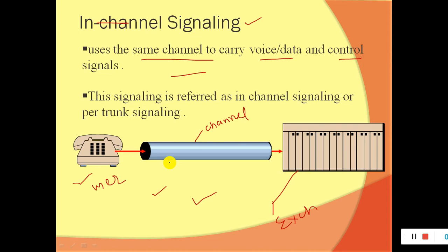Control signals are those signals which help to establish, maintain, and register a call. These are very important — I would say they are as important as your voice and data and cannot be ignored. Signaling refers to these control signals. Here we are trying to understand how many types of signaling we have. First is in-channel signaling, in which data and control signals are combined in a single channel.